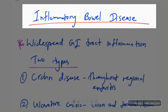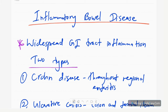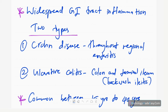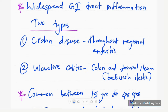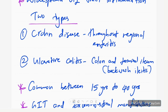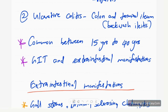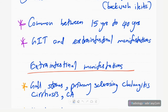Inflammatory bowel disease is a widespread GI tract inflammation. It has two types: Crohn's disease and ulcerative colitis. In Crohn's disease, the involvement is the whole GI tract — that's regional enteritis. In ulcerative colitis, there's common involvement in the colon and sometimes terminal ileum, called backwash ileitis, and the rectum. These diseases are common between 15 to 40 years of age.